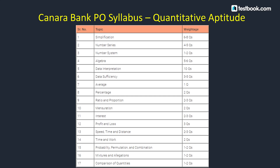From Number System, 1-2 questions may also appear. For Algebra, 5-6 questions will be asked, including Quadratic Equations and 1-2 questions from Linear Equations. For Data Interpretation, there will be 10 questions covering Line Graph, Bar Graph, Pie Chart, and Tabular Graph. Combination DI and Case-let DI also have high chances of being asked.